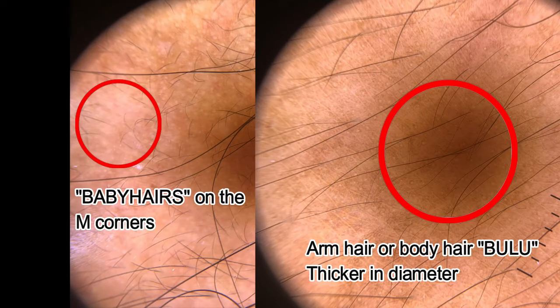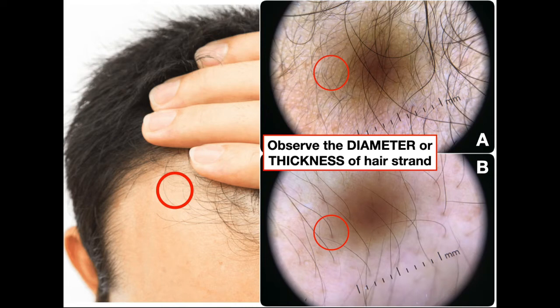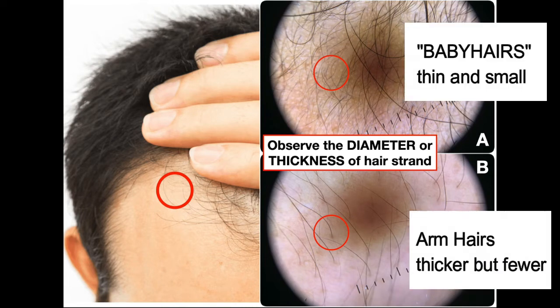Hence, if you see the picture, the correct answer would be A — those tiny hairs are your so-called baby hairs, and the ones in B would be your arm hair. And we know that if you do treatment on your arm, you're not going to get a ponytail here anyway.